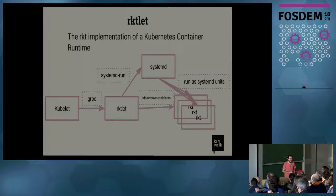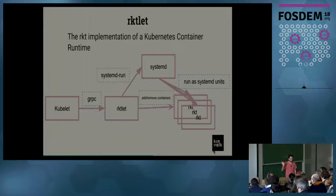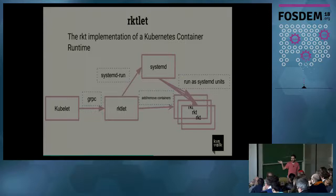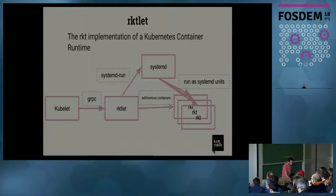How does RocketLib work? The kubelet sends a gRPC request to the RocketLib daemon, which starts a systemd unit per pod. It then adds and removes containers as operations require, communicating with the Rocket instance running in a systemd unit. To implement RocketLib, we had to make some design changes to Rocket.